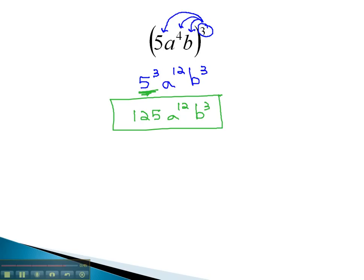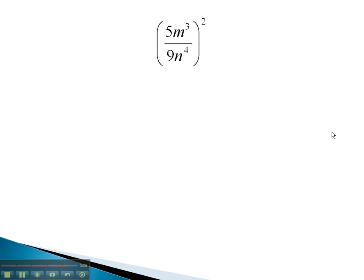Let's take a look at one more example where we can see these power rules work out. In this problem, we see the exponent of 2 outside the parentheses. It will also go on to each factor in the expression, giving us 5 squared. On the m's, we multiply the exponents to get m to the 6th.